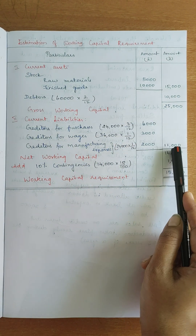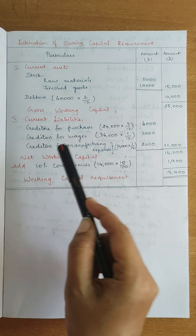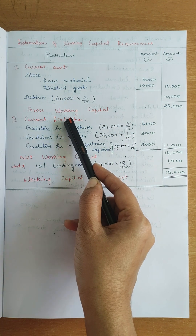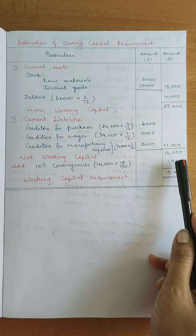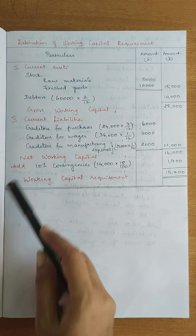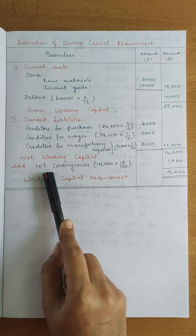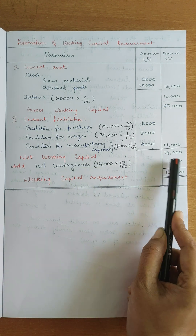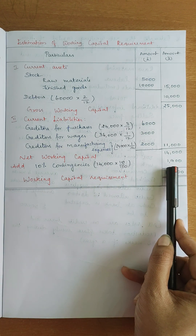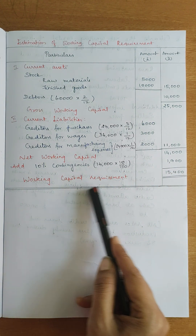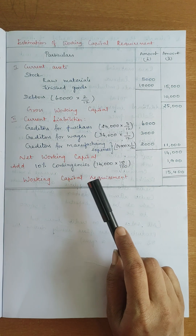Now calculate net working capital. Net working capital = current assets minus current liabilities = gross working capital 25,000 minus 11,000 = 14,000. The question says add 10% for contingencies. 10% of 14,000 = 1,400. So 14,000 + 1,400 = working capital requirement of 15,400 rupees. So the solution is complete.